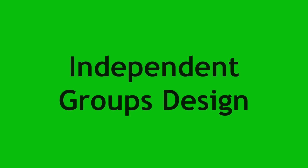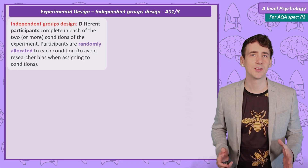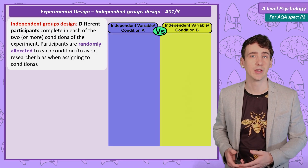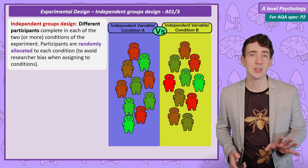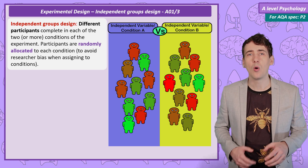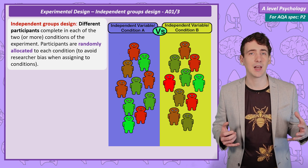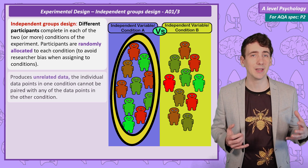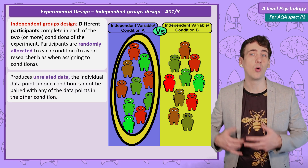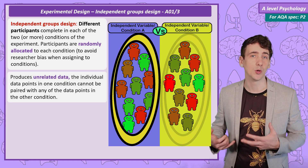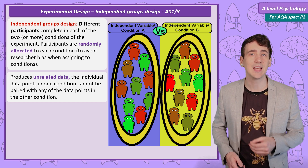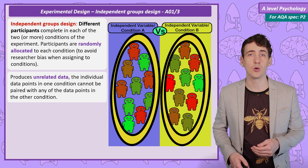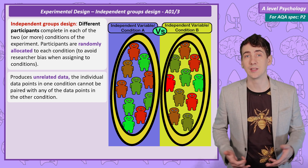Independent groups design. As the name suggests, the groups are independent of each other — different sets of people in each condition. All of the data collected from the group completing condition 1 is compared with all of the data from the group completing condition 2. The data we collect is called unrelated data.